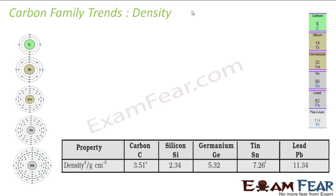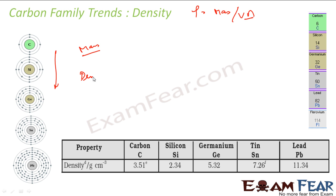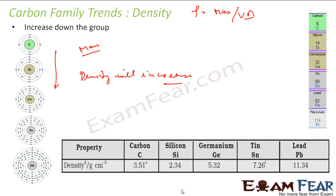Let's talk about density. Density is mass by volume. Since going down the group the mass increases a lot, generally the density will increase as we go down the group. Silicon has some deviation here, but apart from that, it's generally increasing.